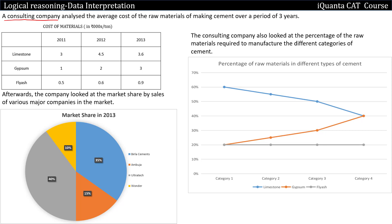The question is: a consulting company analyzed the average cost of the raw materials of making cement over a period of three years. We have a table in which we have been given the cost of materials in thousand rupees per ton.